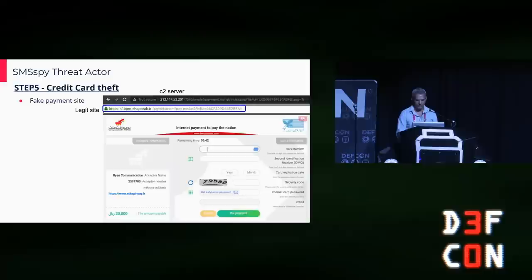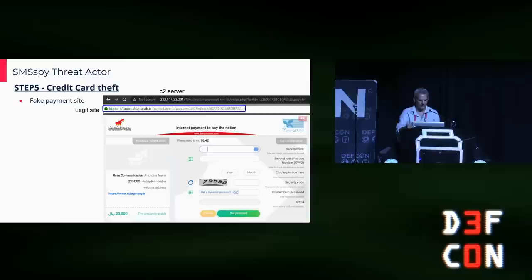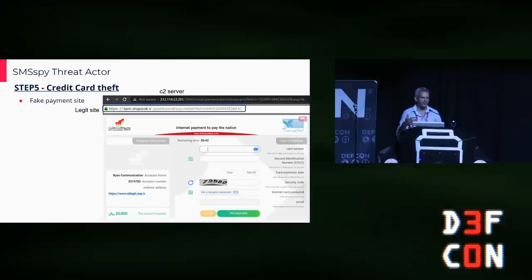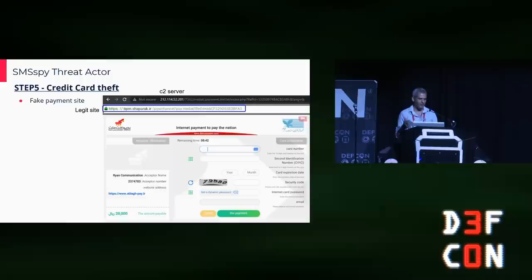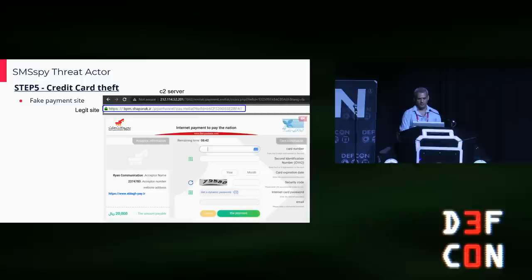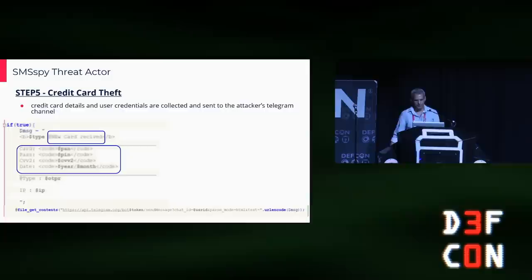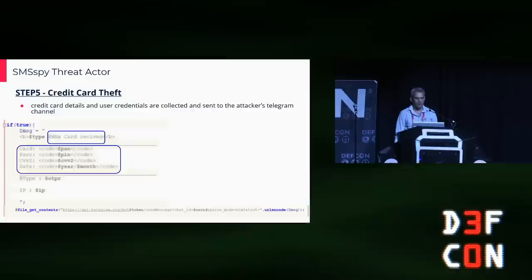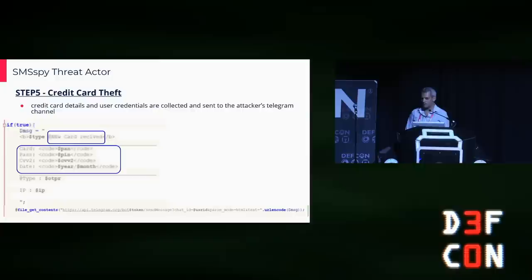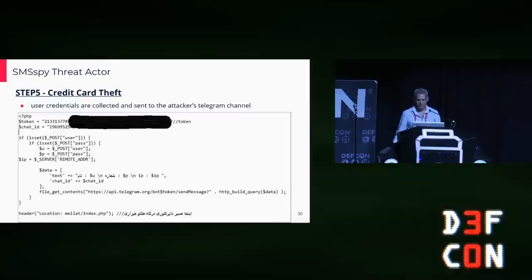This is a fake payment site masquerading as a legitimate government pay site. At the top you can see the IP address — they don't even have a domain name for the C2 server — but below is the URL of a real payment site in Iran, so the victim is allegedly redirected to a legit government site but it's a fake page and the credit card is stolen. The backend code collects the details and sends them to the attacker's Telegram group. The subject of each exfiltration is 'new card received,' and there is a typo there that will help us later.